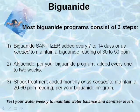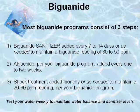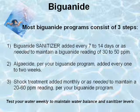Most biguanide programs consist of three steps. Your biguanide sanitizer, added every 7 to 14 days, or as needed to maintain a reading of 30 to 50 parts per million. Algaecide, per your biguanide program, added every 1 to 2 weeks. Shock treatment, added monthly or as needed, to maintain a 20 to 60 parts per million reading, per your biguanide program.